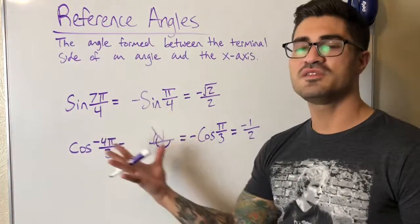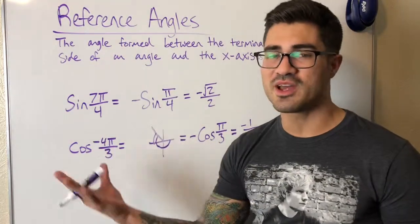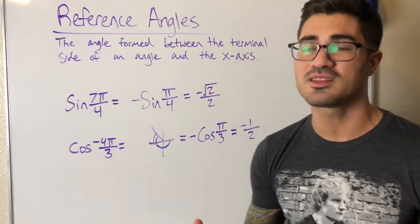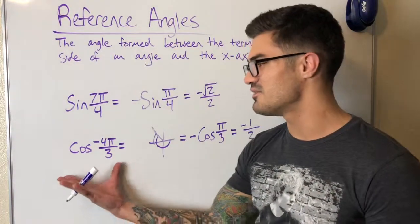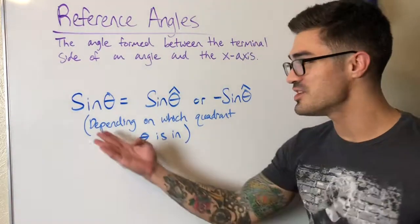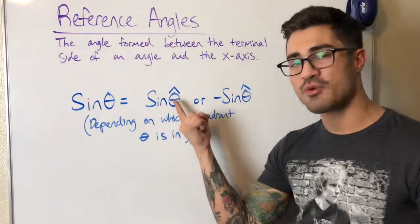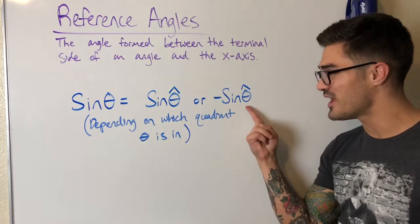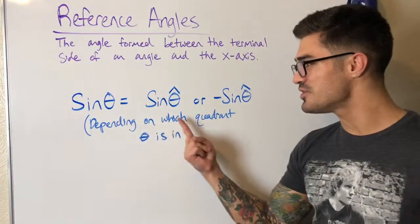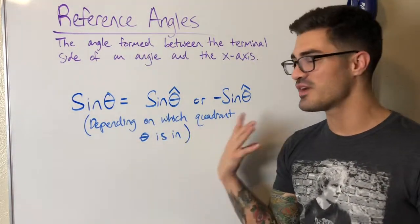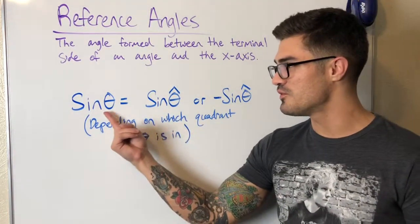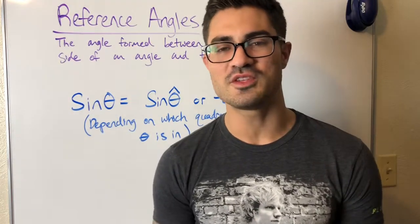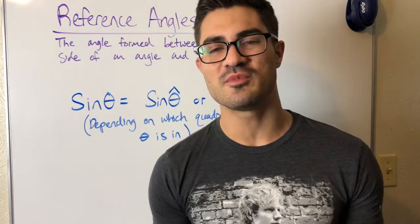This approach works for any angle. Even something like sine of 15 pi over 4 — as long as you can find a reference angle that's a known value like pi over 3, pi over 4, or pi over 6, you can evaluate it without memorizing those exact values. In general, sine of theta equals positive or negative sine of theta-hat depending on which quadrant theta is in. Find the reference angle, determine the sign, and you have the exact value. Hopefully this helped — like and subscribe if it did, and I'll see you in the next video.